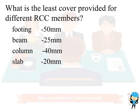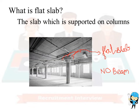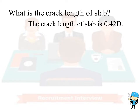The second question is: what is a flat slab? The slab which is supported directly on columns is called a flat slab. The flat slab contains no beams.